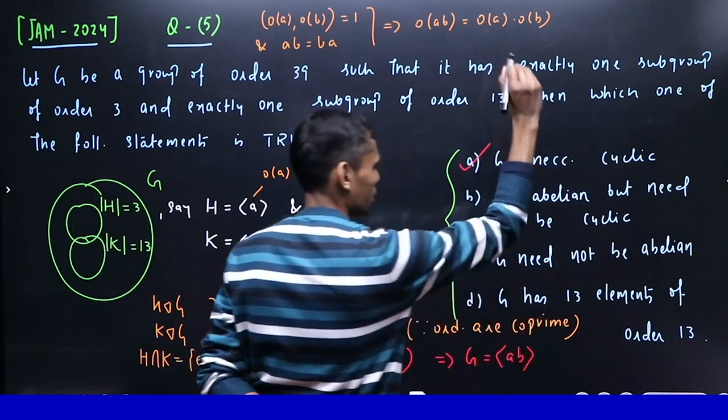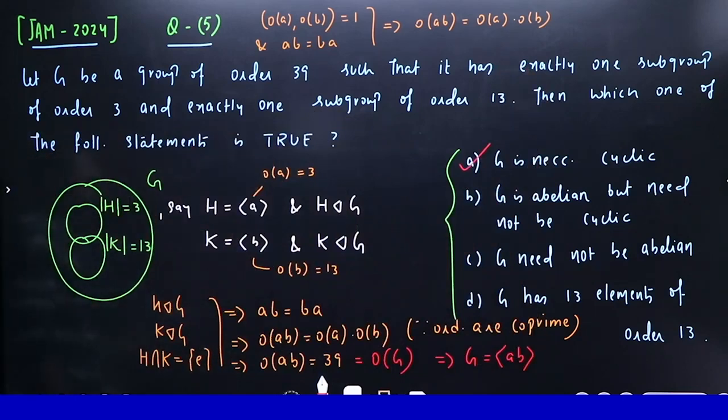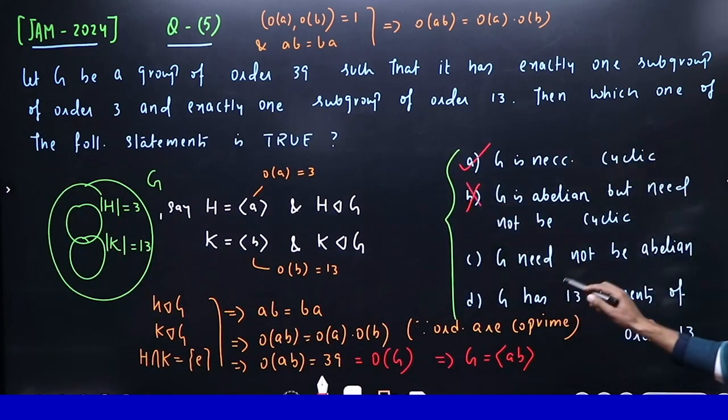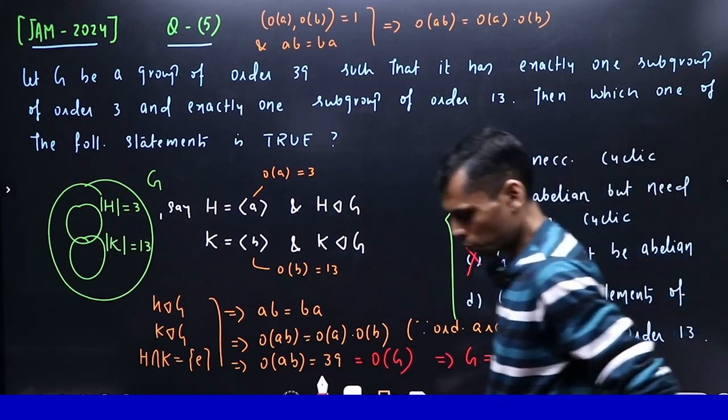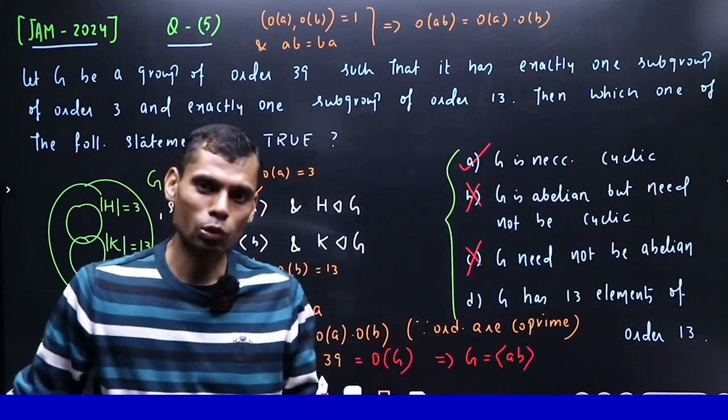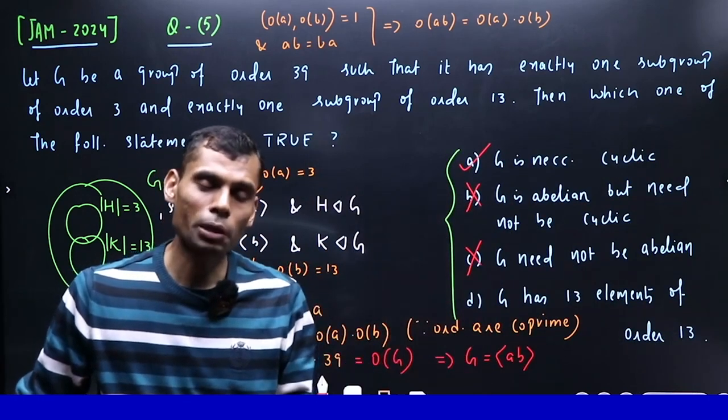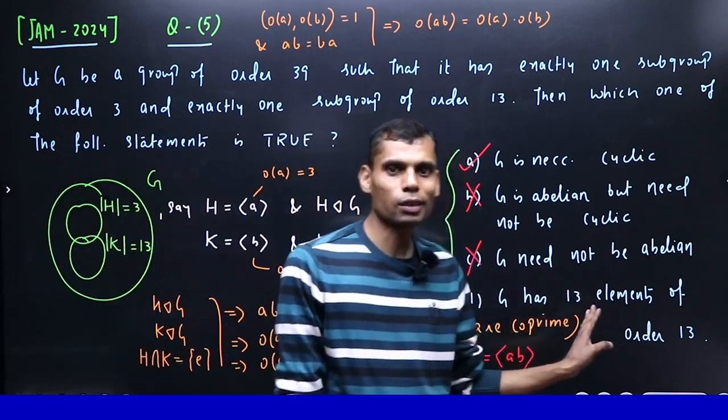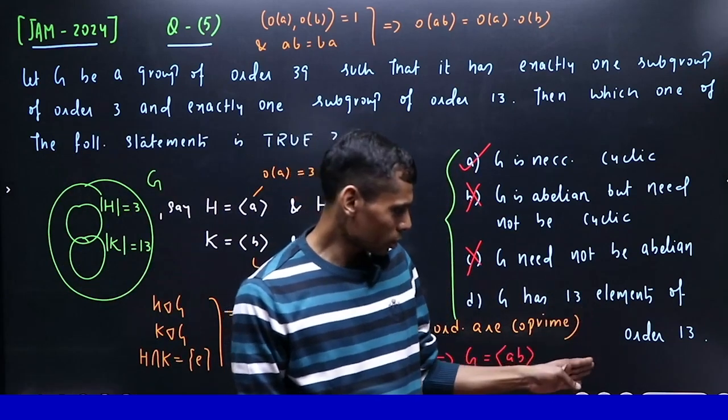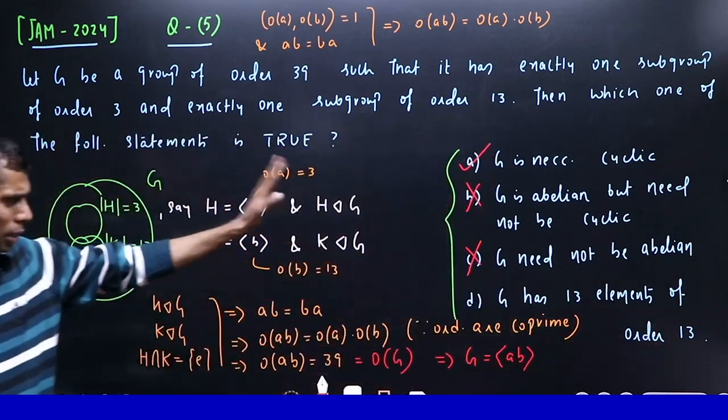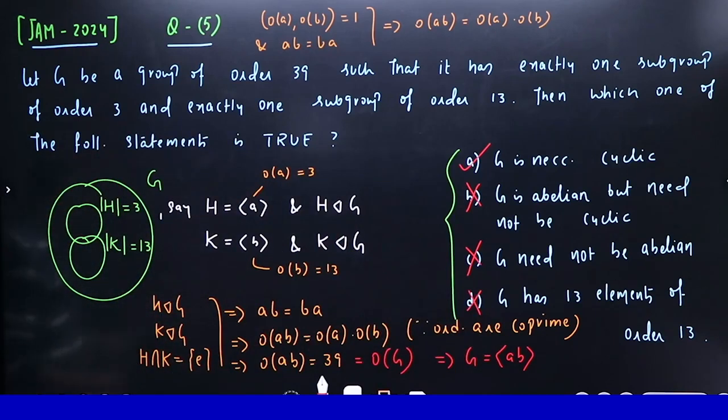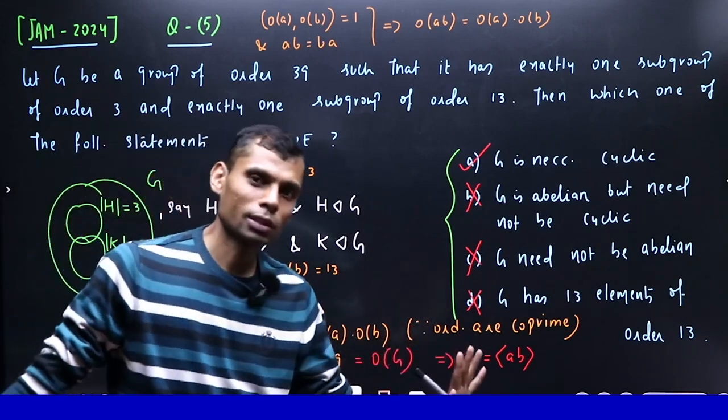Only someone with determination in group theory can solve this. The first option is correct. G is abelian but need not be cyclic - wrong. G need not be abelian - wrong. G has 13 elements of order 13 - this cannot happen because in any finite group, elements of prime order p appear in multiples of phi(p), which is p-1. For order 13, that's 12 elements, not 13. Question solved. Thank you, please leave good comments.